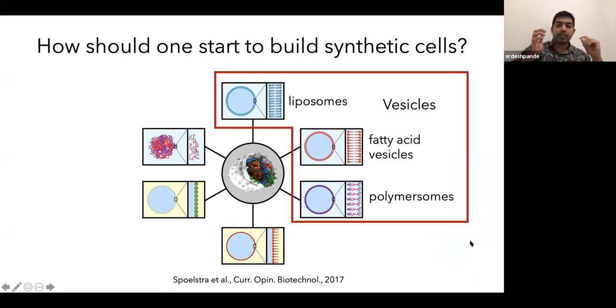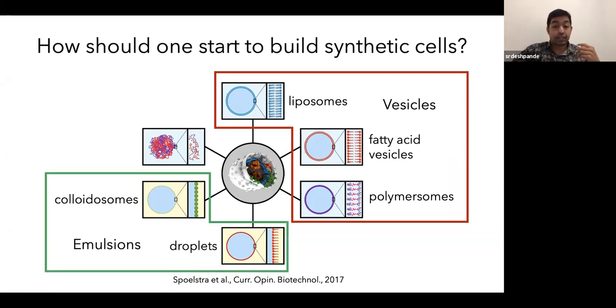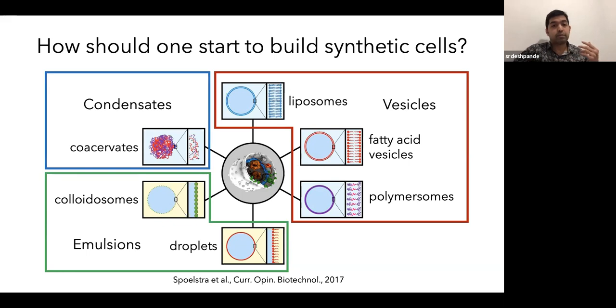For example, you can think of using vesicles like liposomes, fatty acid vesicles, polymersomes. You can think of droplets and colloidosomes, which come into the category of emulsions. Or you can look at membrane-less condensates, for example, formed through coacervates. And in this talk, I want to show you how you can combine vesicles with condensates to form hybrid functional containers.